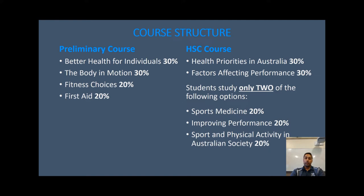In Year 12, the HSC course, students will be studying Health Priorities in Australia and Factors Affecting Performance. Students also have to study two options from three available: Sports Medicine, Improving Performance, and Sport and Physical Activity in Australian Society.